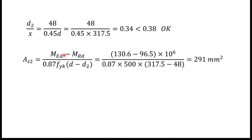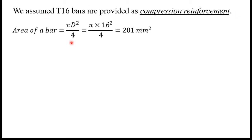Now I can find As2 — the compression reinforcement area — using: As2 = (MEd − MRd) / (0.87·fyk·(d − d2)). Substituting the previously found values and simplifying gives As2 = 291 mm².